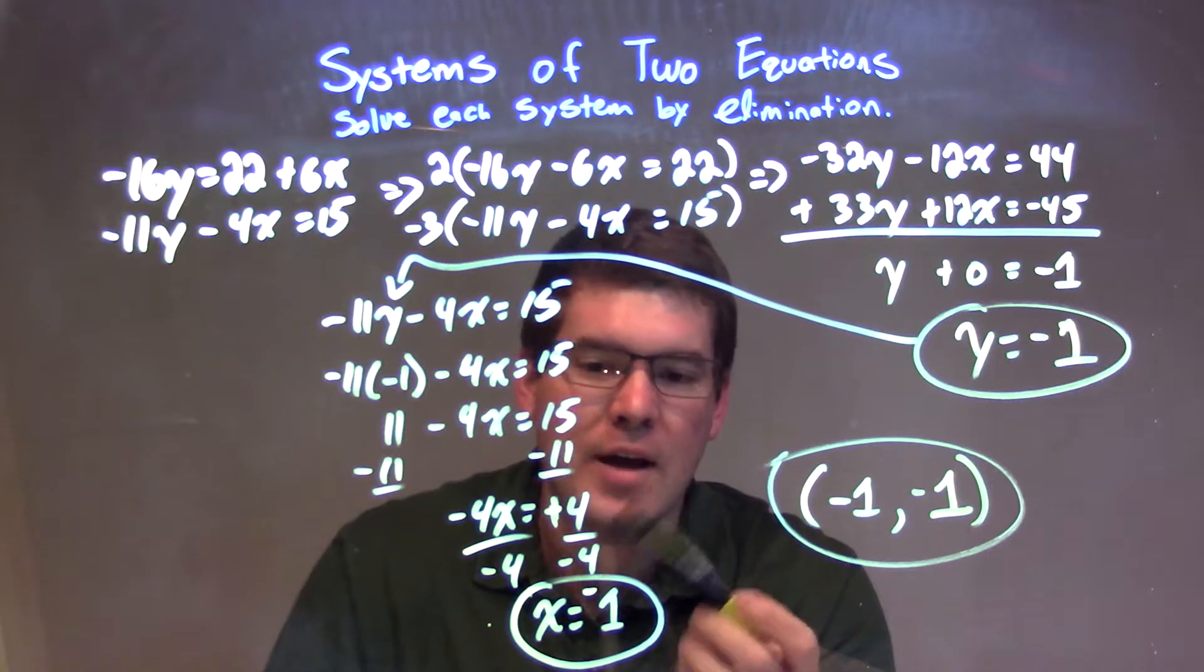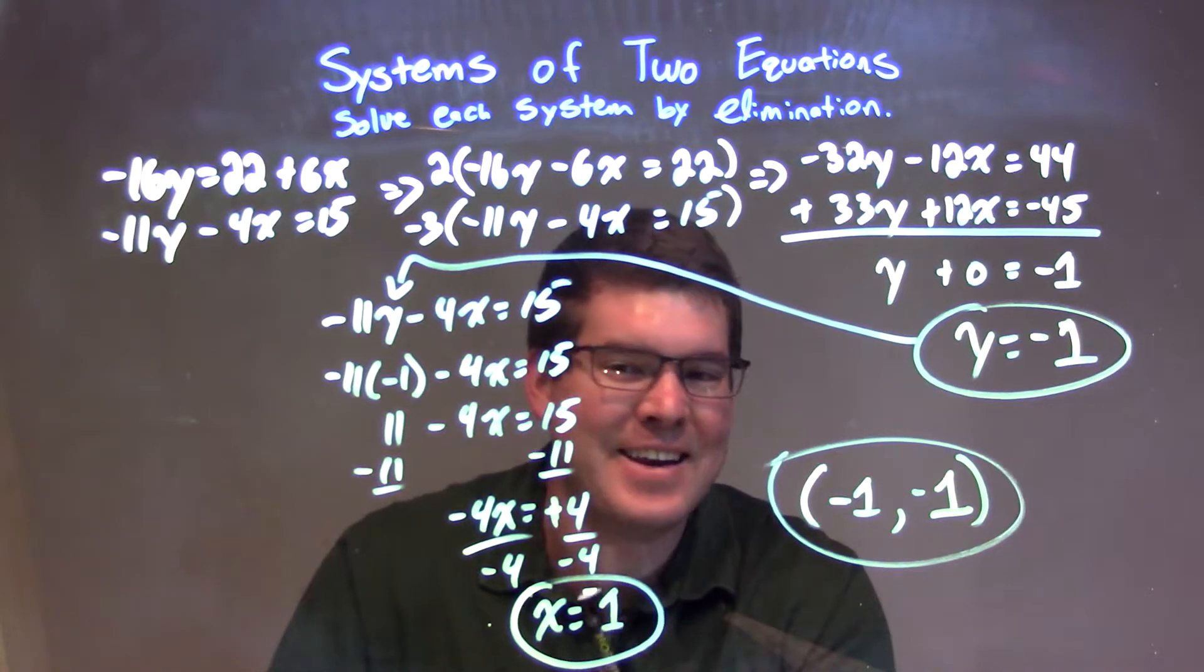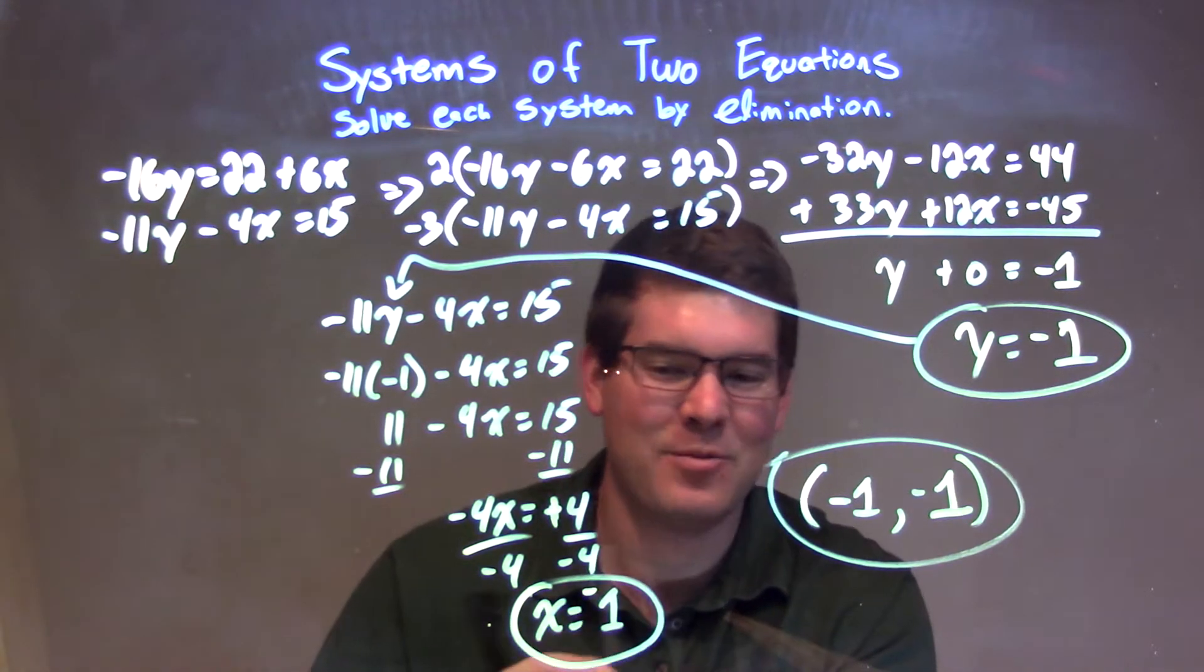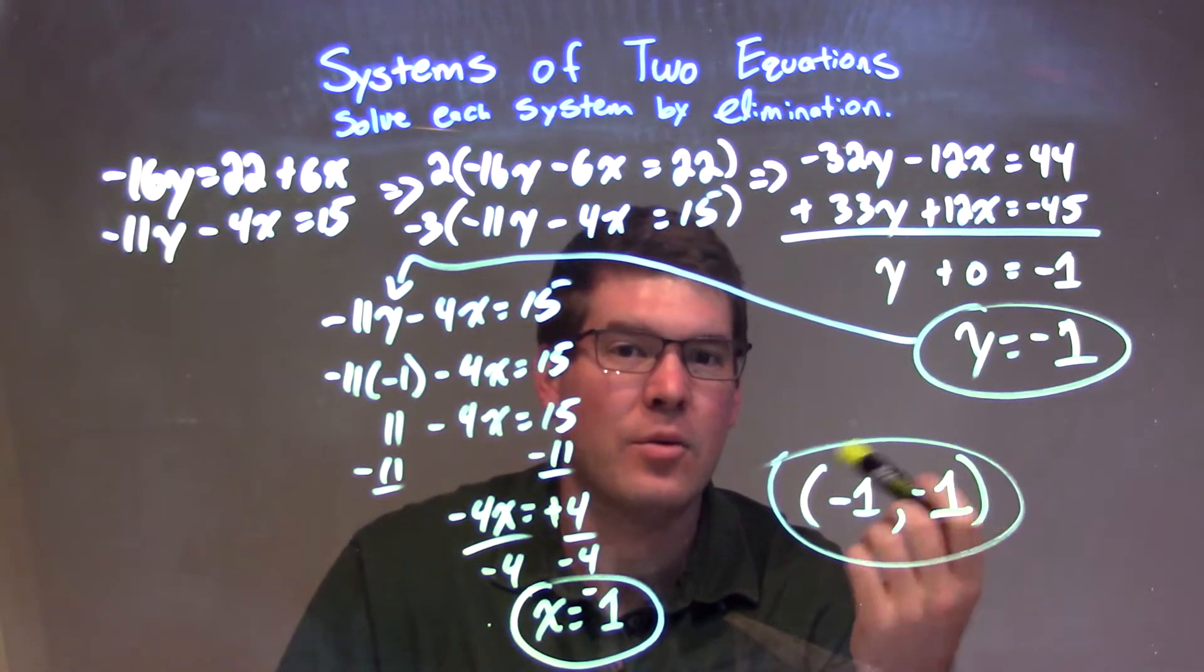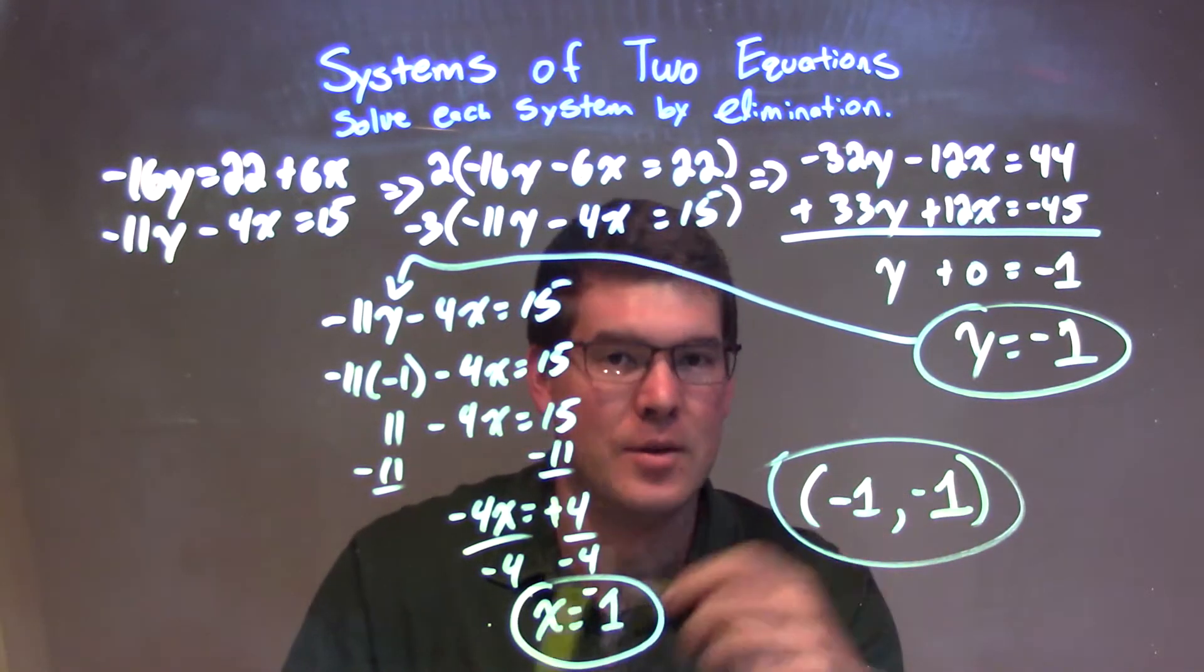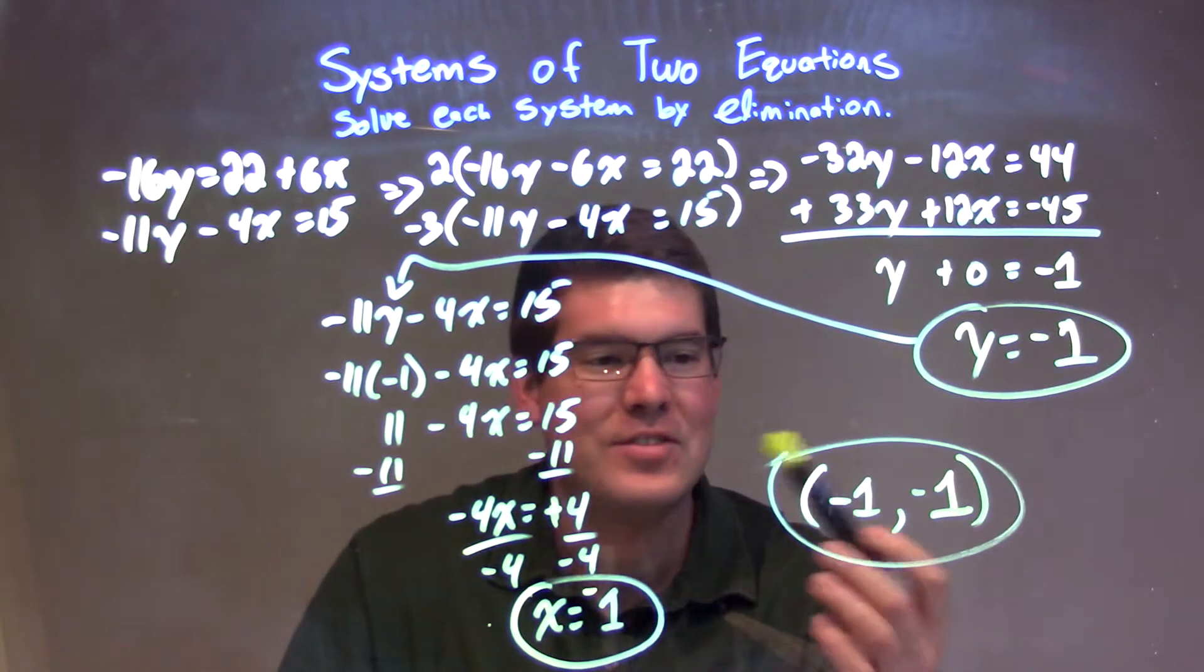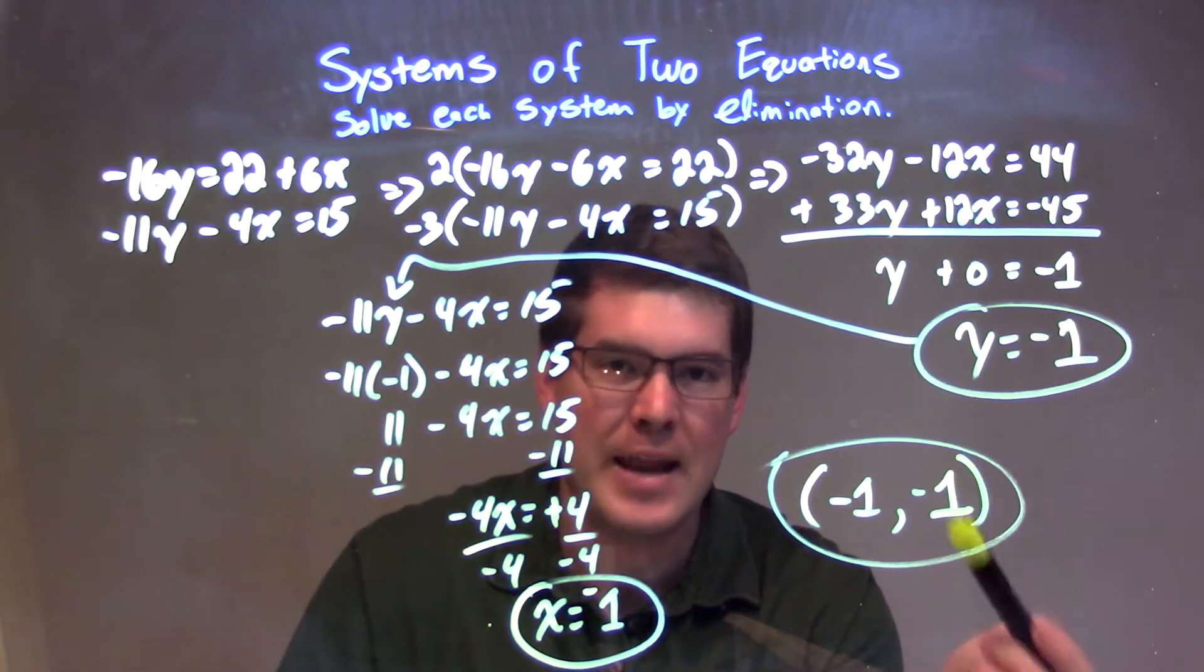And simplifying and solving, I got x by itself to be a negative 1, not a positive 1, but negative 1 right there. So we have our x and y values. We can write that as a coordinate point. So again, our final answer here, using the elimination method for the system of equations, is negative 1 comma negative 1.